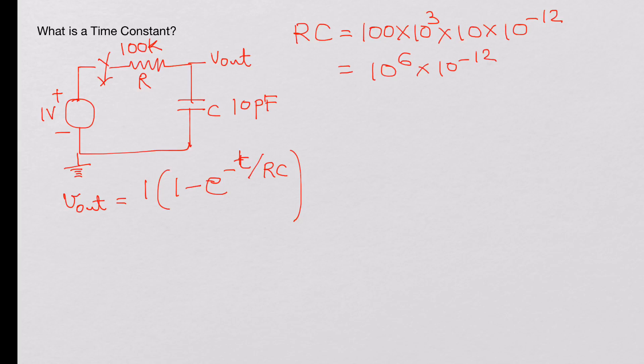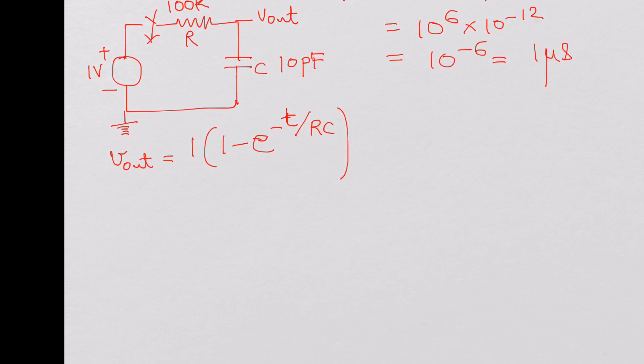That is 10 to the 6 multiplied by 10 to the minus 12, which is 10 to the minus 6, that is 1 microsecond. Why it is a second, let's look at this.